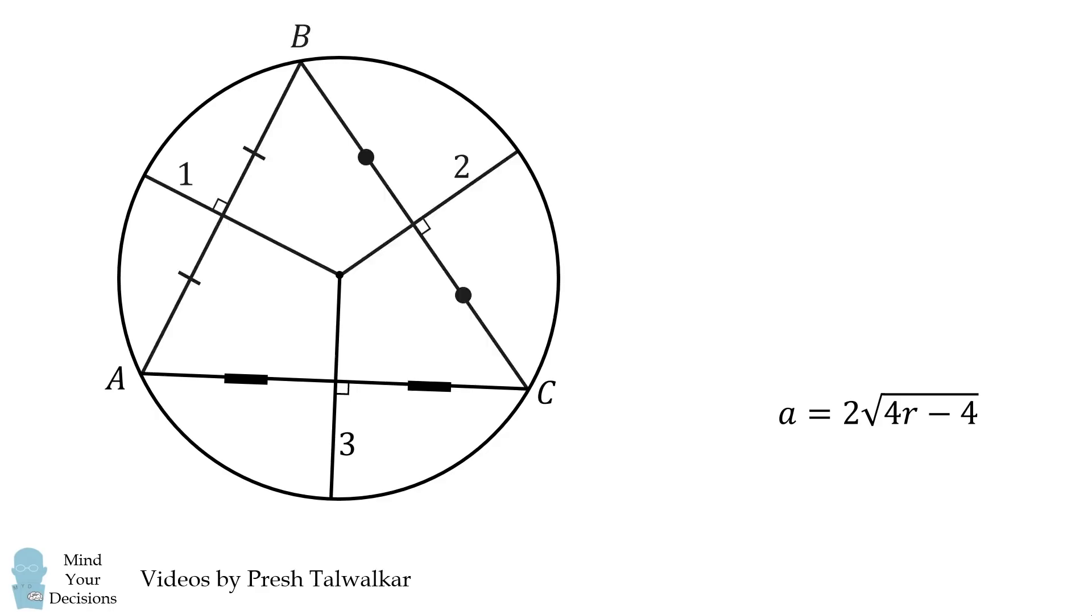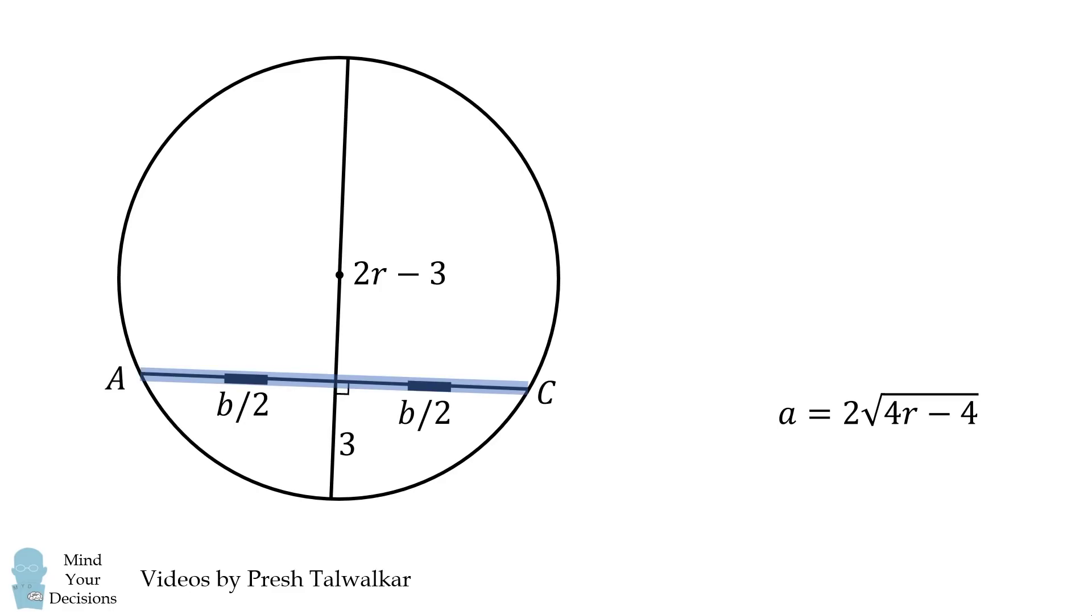We will do a similar calculation to solve for the length of the side which has a length equal to b. Here this length will be equal to 2R minus 3, and each of these will be equal to b over 2. We thus have b over 2 multiplied by b over 2 is equal to 2R minus 3 multiplied by 3.